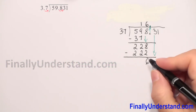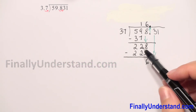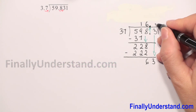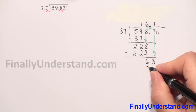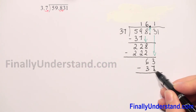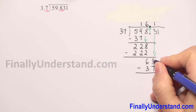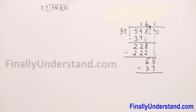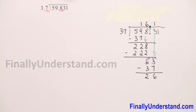We bring down the next digit, giving us 63. At the top we have the decimal point. How many times does 37 go into 63? One time. We write 1 on top. Multiplication: 1 times 37 is 37. For subtraction, 3 minus 7 requires borrowing from 6, giving us 13. So 6 minus 1 is 5, and 13 minus 7 is 6, 5 minus 3 is 2.